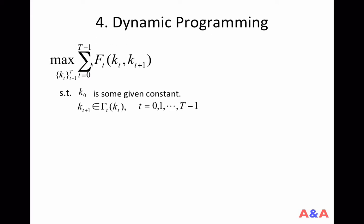The objective function is a sum of period returns, and at each date, the period return or immediate payoff is a function of the current state and the state chosen for the next date.